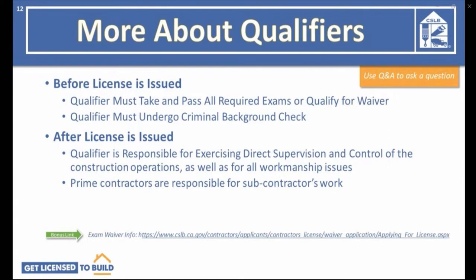The qualifier must undergo a criminal background check. After the license is issued, the qualifier must be in a position to exercise direct supervision and control of the company's operations and is responsible for all workmanship issues. If you're trying to get a B general building contractor license and you hire subcontractors, you're responsible as the prime contractor for the work that they do.